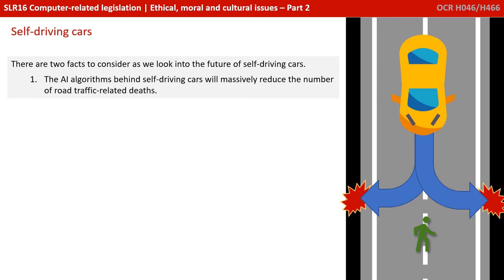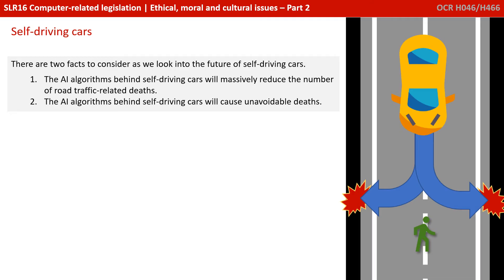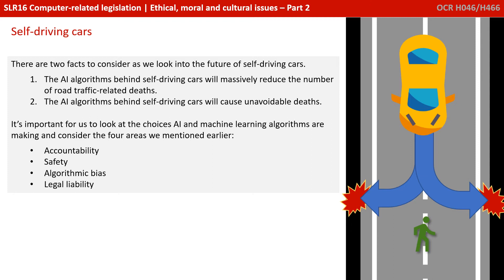There are two facts to consider as we look into the future of self-driving cars. One: the AI algorithms behind self-driving cars will massively reduce the number of road traffic related deaths. Two: the AI algorithms behind self-driving cars will end up causing unavoidable deaths at some point. It's important for us to look at the choices AI and machine learning algorithms are making and consider four areas: accountability, safety, algorithmic bias, and legal liability.